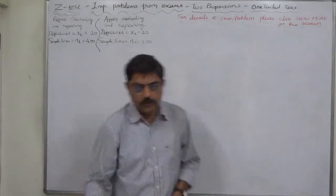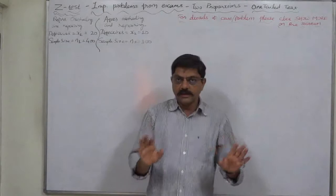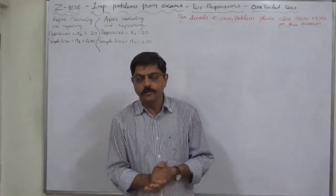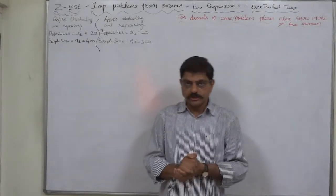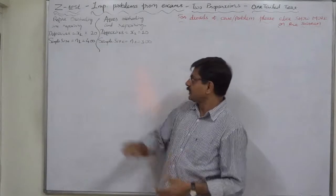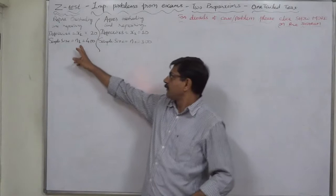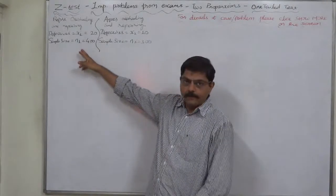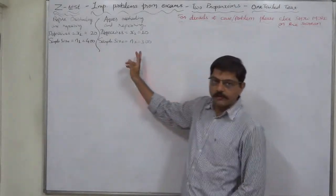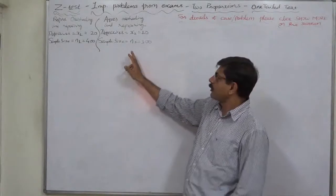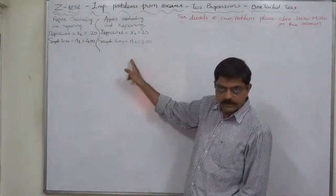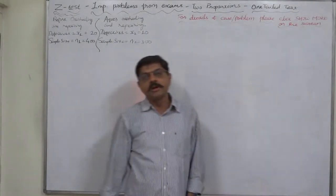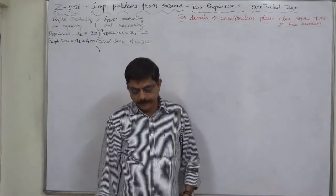First of all, there are two populations. The first is production by the machine before overhauling and repairing, and the second population is production by the same machine after overhauling and repairing.